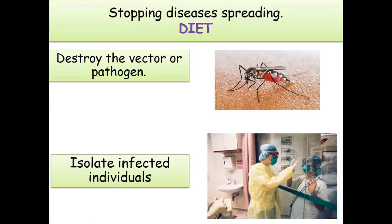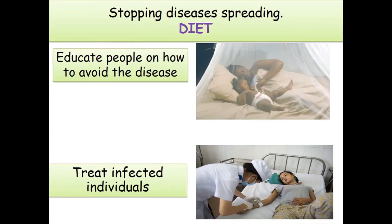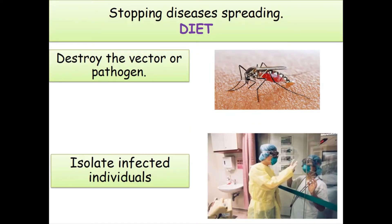DIET stands for: Destroy the vector or pathogen, Isolate infected individuals, Educate people on how to avoid the disease, and Treat infected individuals. To destroy the vector or pathogen, you can destroy the virus or pathogen directly, or in the case of malaria, destroy the vector — for example, destroying mosquitoes prevents the spread of malaria since it spreads through mosquitoes to humans.